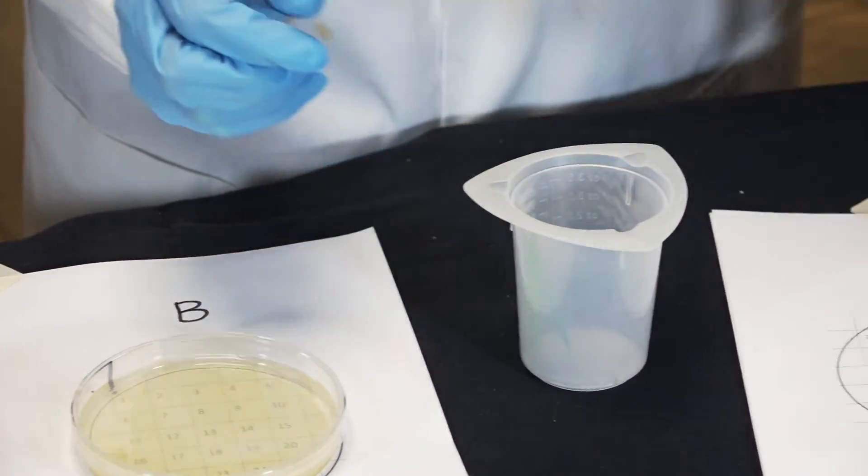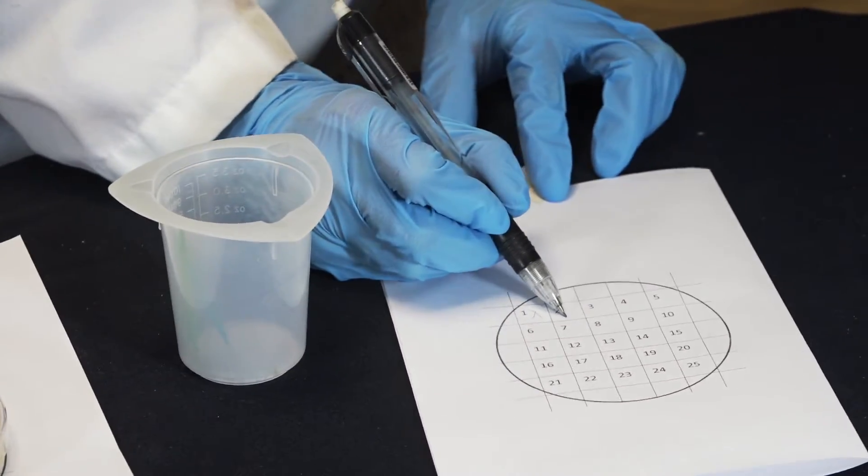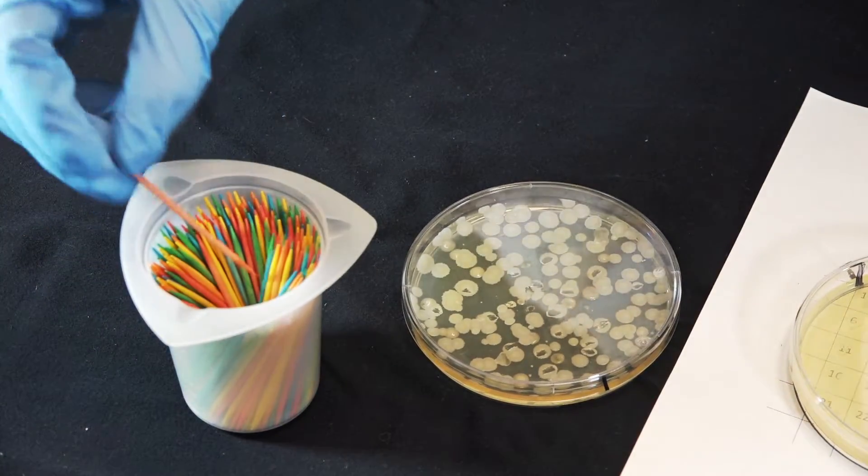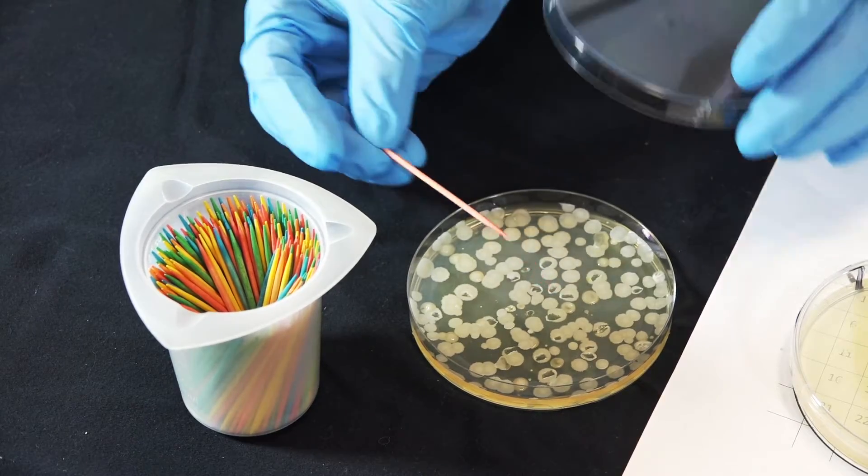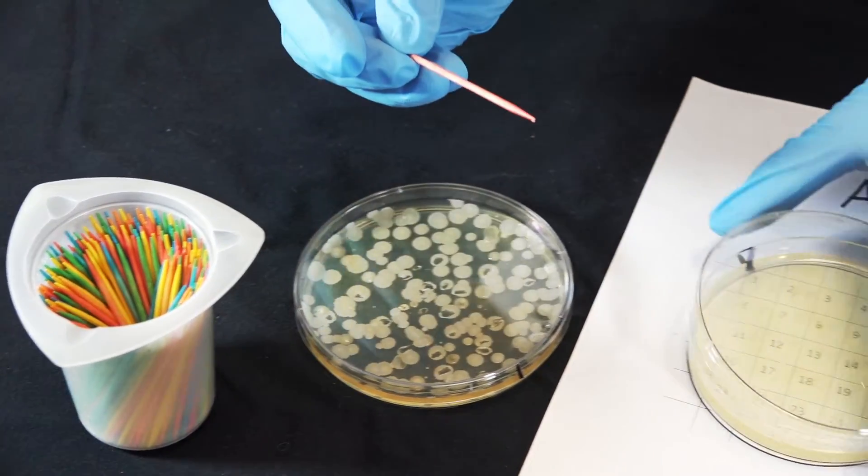Then discard the toothpick and mark off square two. Continue picking colonies until you've replica plated 25.